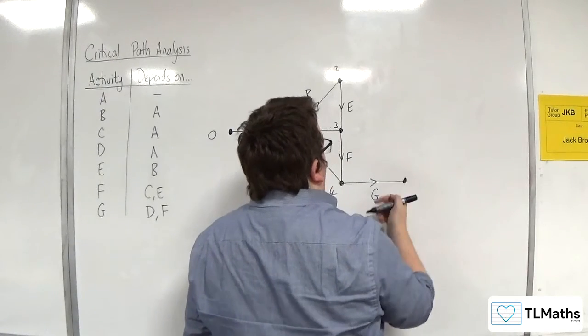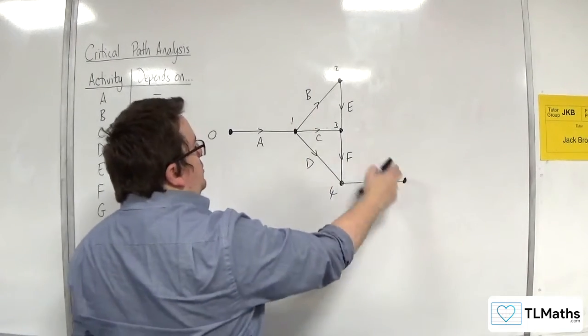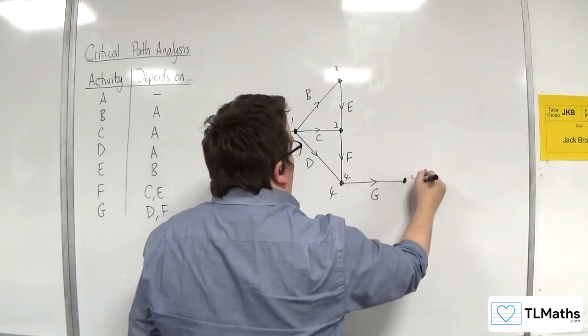And then here is my end node. So this would be labelled 4, and that would be labelled 5.